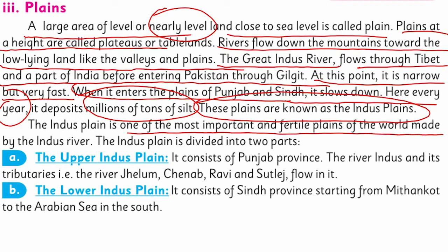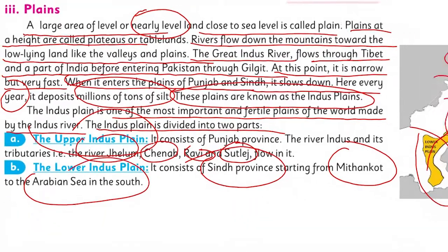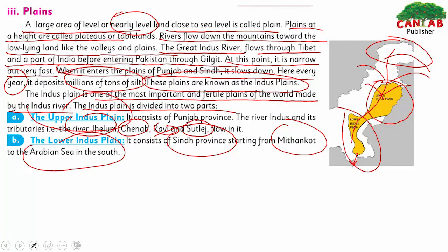The Indus Plains are the most important and fertile plains in the world, made by the Indus River. The Indus Plain is divided into two parts: the Upper Indus Plain, which includes Punjab Province with tributaries like the Jhelum, Chenab, Ravi, and Sutlej rivers; and the Lower Indus Plain, which includes Sindh Province from Mithankot southward to the Arabian Sea.